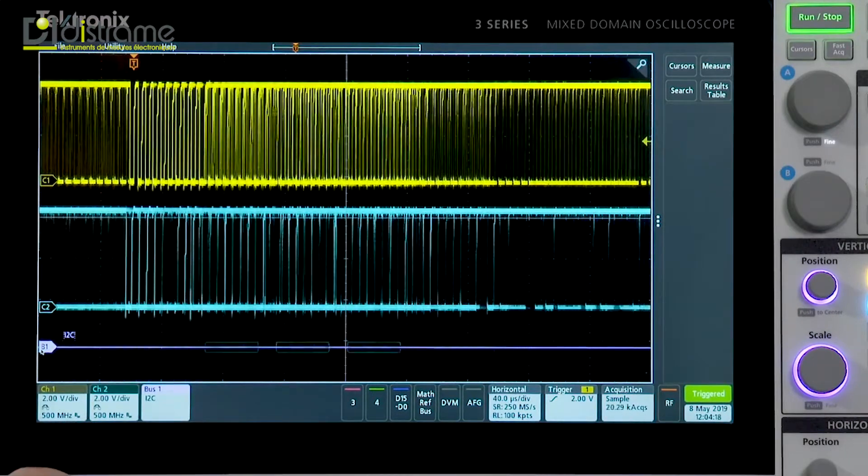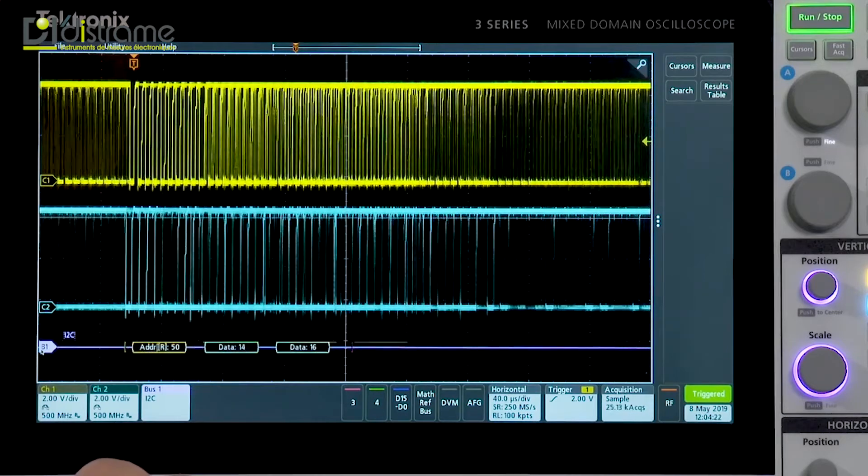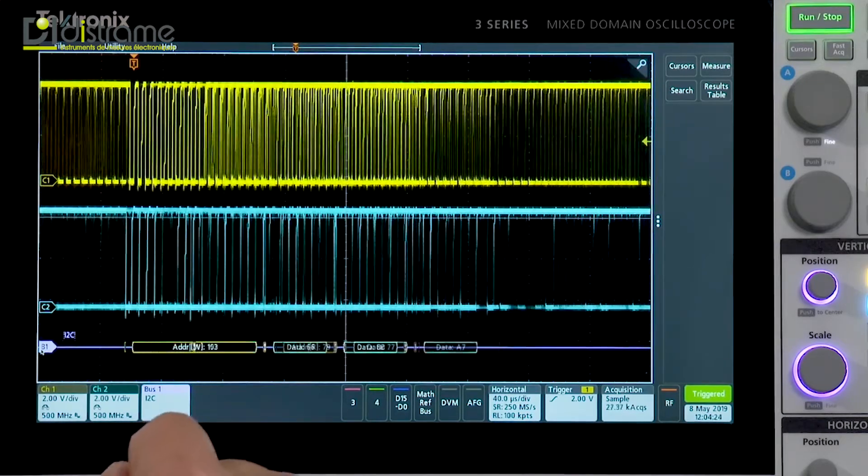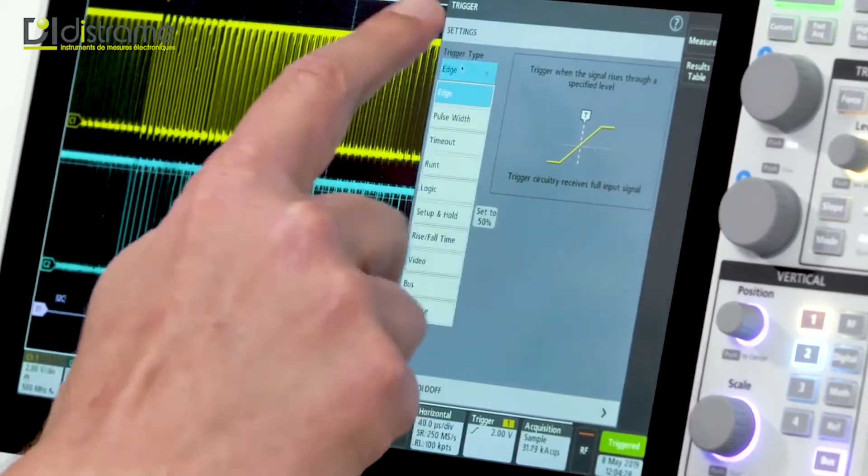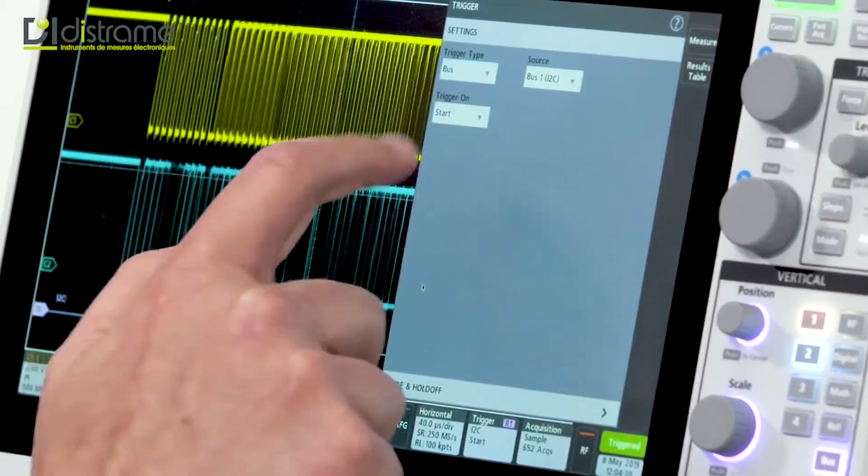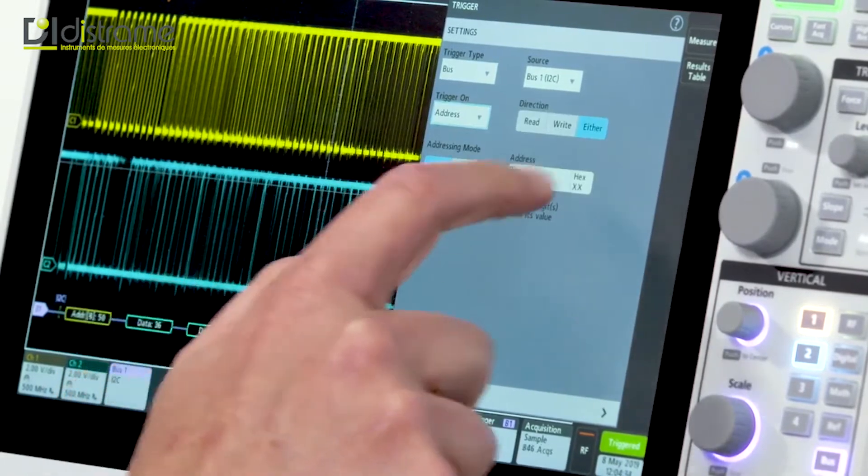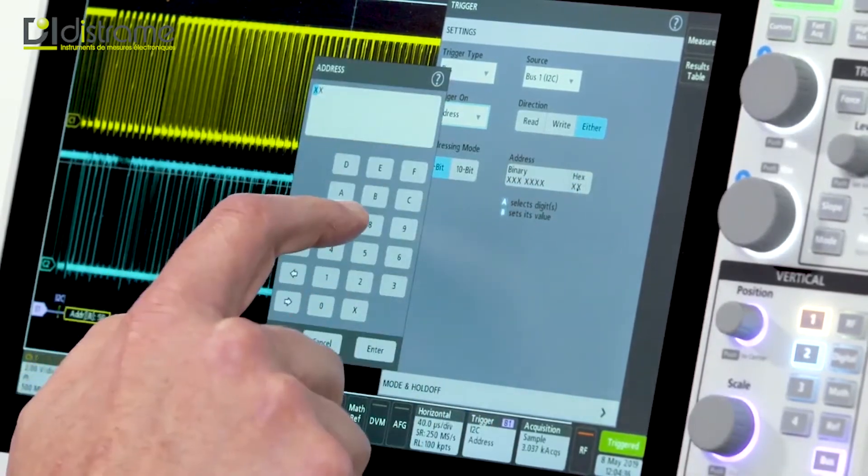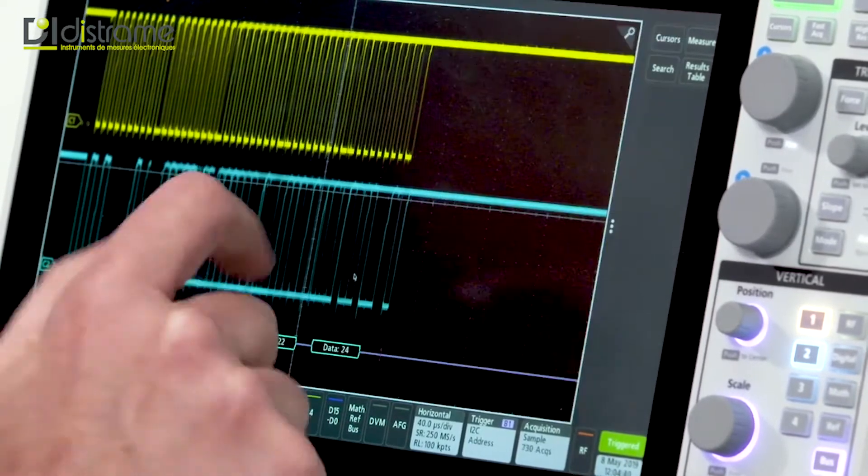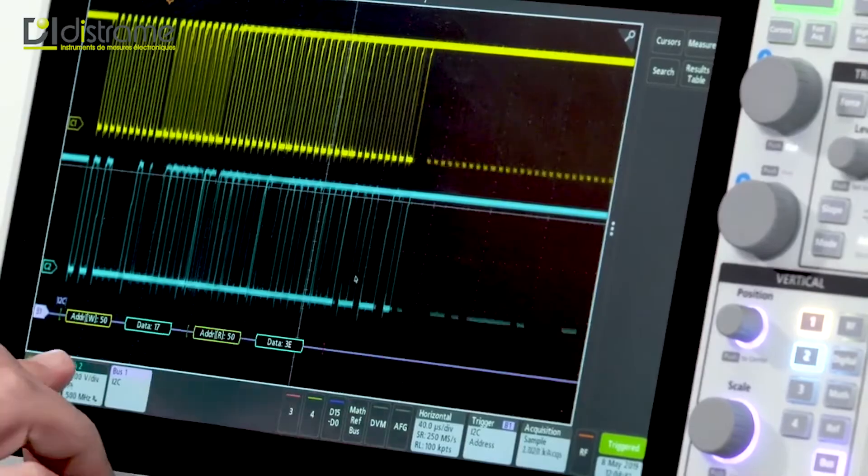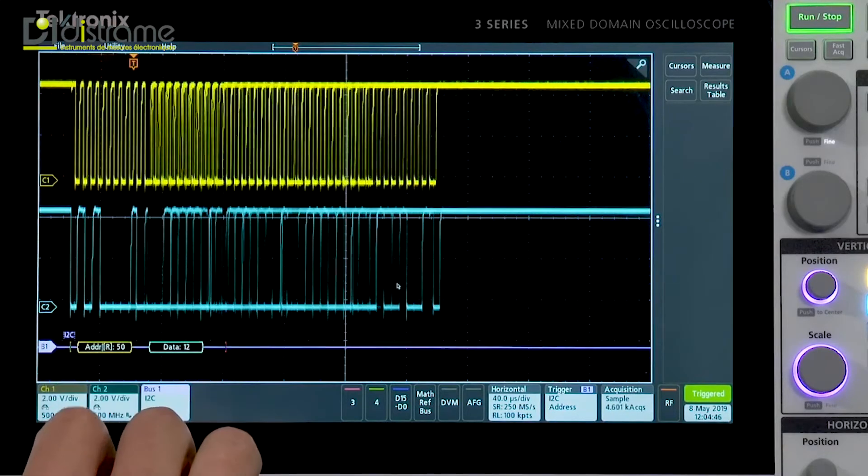Beyond simply decoding the bus, we have the ability to trigger on packet-specific content going by on the bus. To do that, I would go to the trigger menu, select bus as my trigger source, and let's say I want to trigger on reads or writes to address 50. So I'll enter 50 and close my menu, and you can see that we are now triggering on reads and writes to address 50.